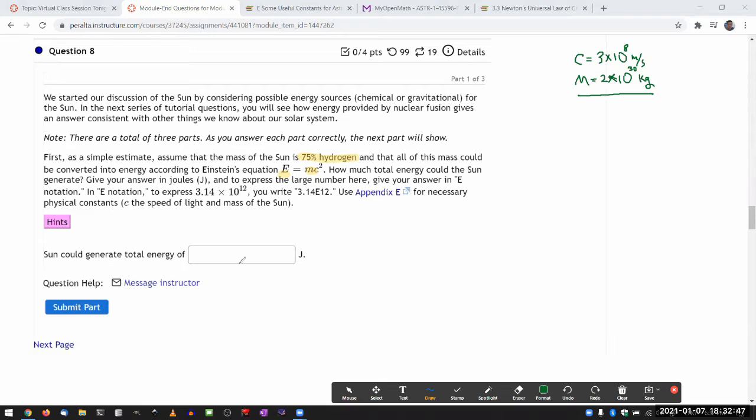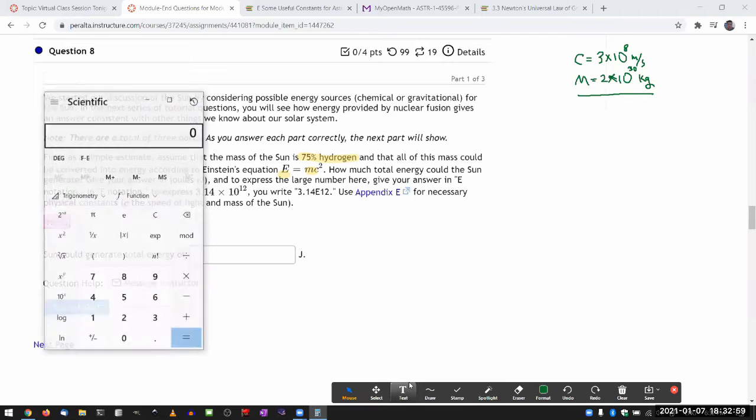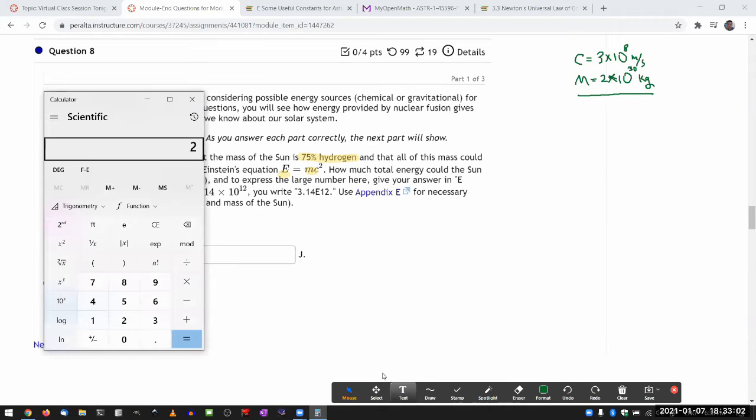So the question basically told me to use 75% of this and put it through this equation there. So I'll break up my calculator and do 2, and this is the E notation of my calculator, 2 times 10 to the power of 30. I need 75% of that. A way to get it is to multiply it by 0.75, 75%. That's 75% times.